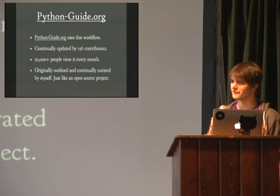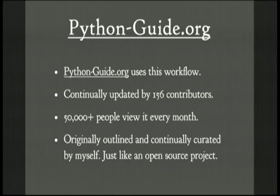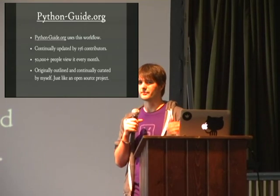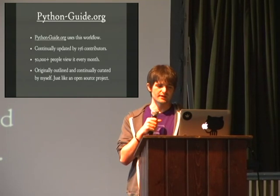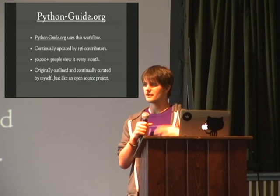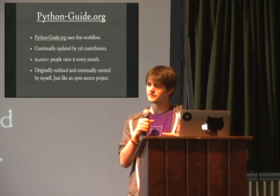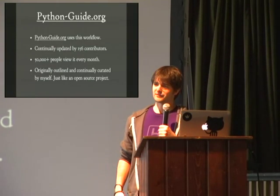If you use something like Read the Docs and GitHub pull requests, you can get instant version-controlled documentation that anyone in the world can read and contribute to instantly — hosted for free. The software development community seems to be a testbed. PythonGuy.org is a site that I run using this workflow — it's continually updated by about 156 people and about 50,000 people view it every month. I sat down and architected the whole project with an outline of all the different sections, treated it just like an open source project, and people started sending in pull requests.